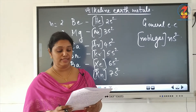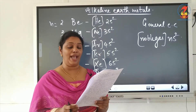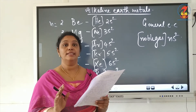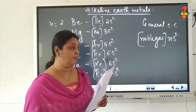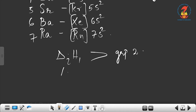Now let us discuss properties of group 2 elements in a question-answer format. The first ionization enthalpy of alkaline earth metals is higher than group 1, but the second ionization enthalpy is smaller than group 1. So the first ionization enthalpy ΔH₁(i) is greater for group 2, and the second ionization enthalpy ΔH₂(i) is lesser for group 2.